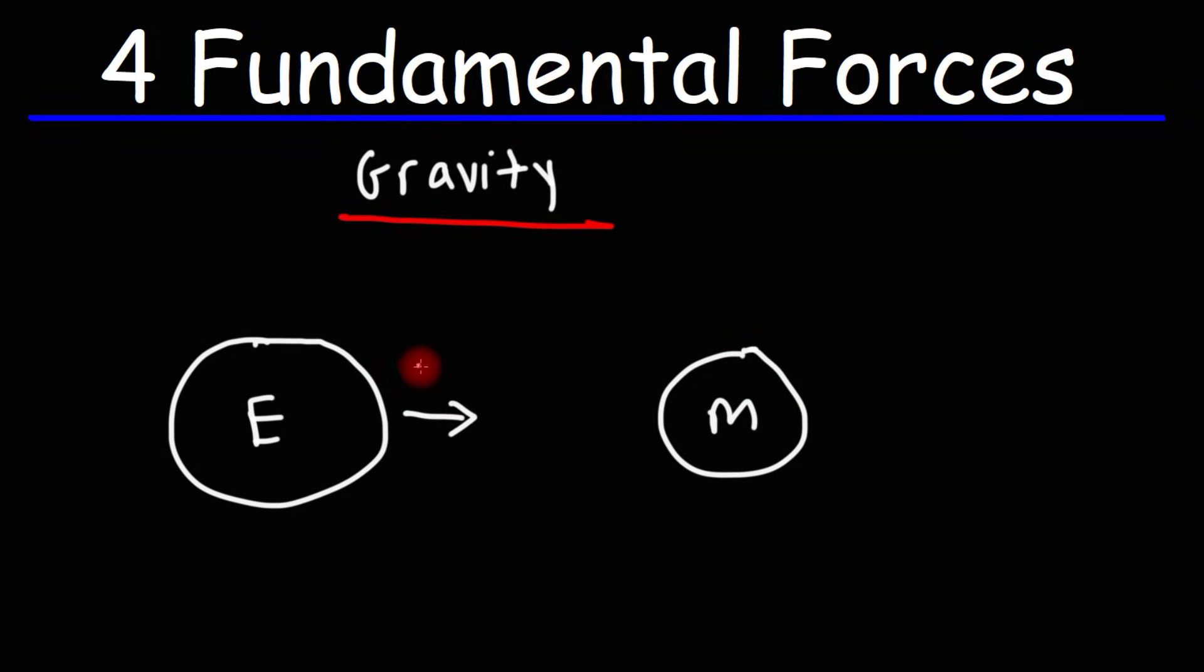Gravity is a force that attracts objects together. It's a force of attraction, not repulsion. The gravitational force can be calculated using this equation. It's G times M1 times M2 over R squared.